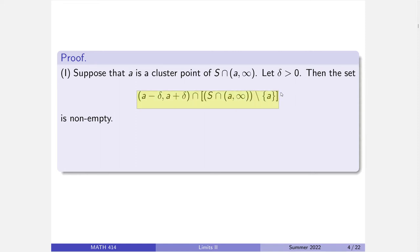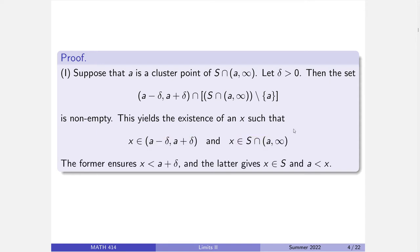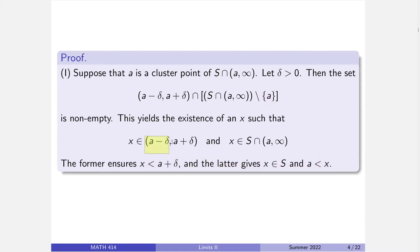We'll prove one and note that two works the same way — a theme for a couple of proofs here. Suppose A is a cluster point of the set. Given a delta, that means the set is not empty. Using the set definition of cluster point, since that intersection is not empty, I can find an element X that lives in S intersected with that interval. This implies X is in S and X is strictly bigger than A and strictly less than A plus delta. We only needed part of the interval but not the full thing.